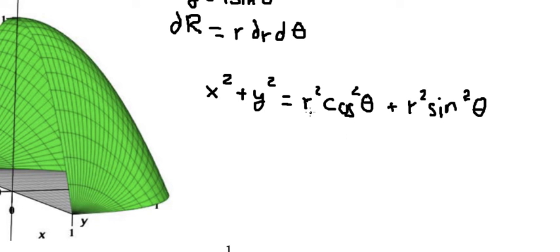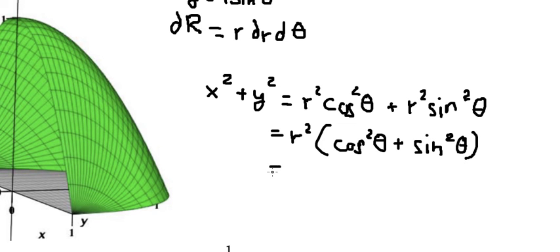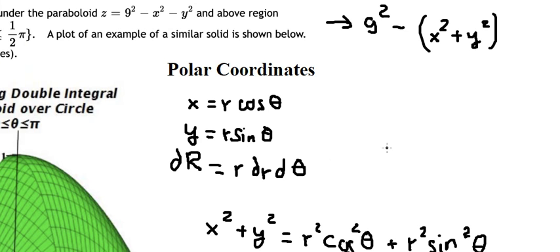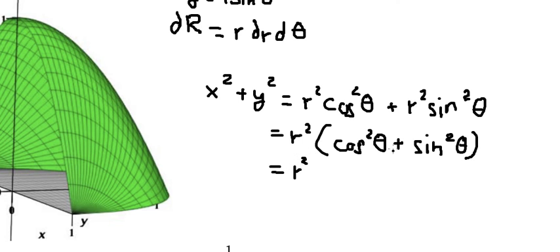So we can do factorization and we have cosine theta squared plus sine theta squared, and this one equals to number one. So we have r squared. So that means this one we change by r squared in here because this one equals to number one.